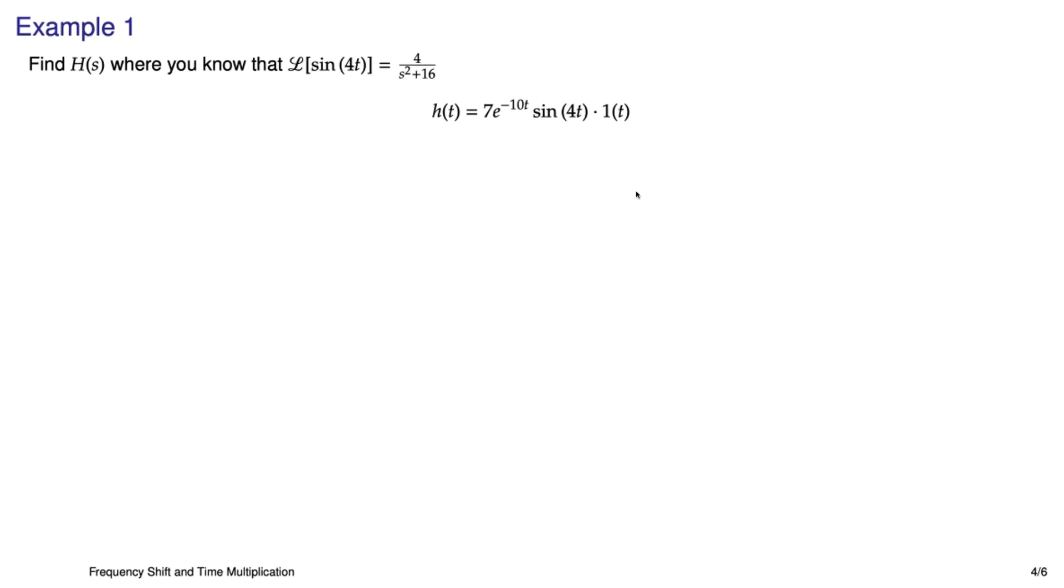In this example, we have this h(t) that actually is often in Laplace transform tables, an exponential times sine. And what we are saying is the only Laplace transform we know is that of sine 4t. So the first thing you do is recognize that this is definitely a complex frequency shift situation. And what we'll do is name f(t) equal to the quantity that is not multiplied by e^(-10t). So f(t) is just equal to 7 times sine 4t.